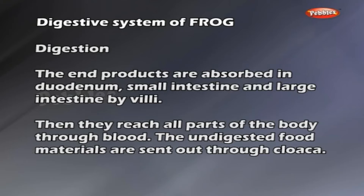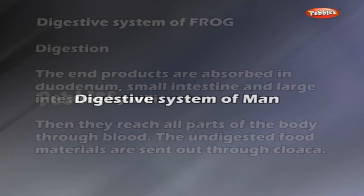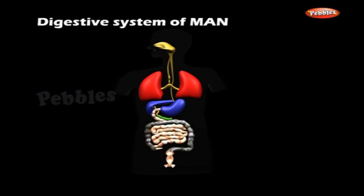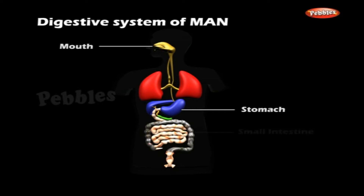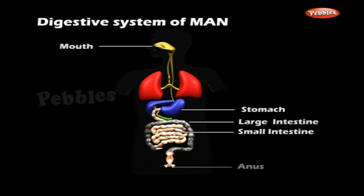The digestive system of man includes mouth, pharynx, esophagus, stomach, small intestine, large intestine, rectum and anus. The glands attached to the digestive system are salivary glands in the mouth, gastric glands in the stomach, liver and pancreas. The small intestine wall also secretes intestinal juice.